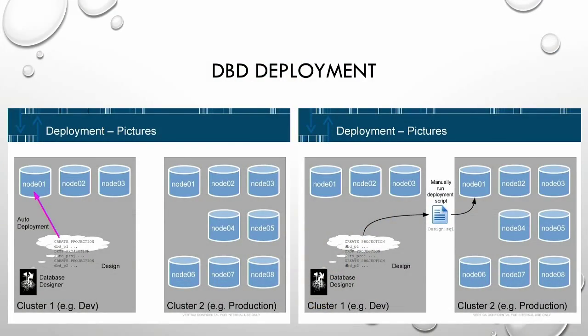Once the design is final, there are two ways the database designer is typically used. First, the DBD can automatically deploy a design in a cluster - it creates projections, loads data into them, and cleans up by dropping old projections no longer necessary. Second, since the DBD is a resource-intensive, sophisticated search and optimization process, many people don't want to slow their production cluster. So they import relevant data into a development cluster, and the DBD produces a deployment script which can then be used to reorganize data in a production cluster.